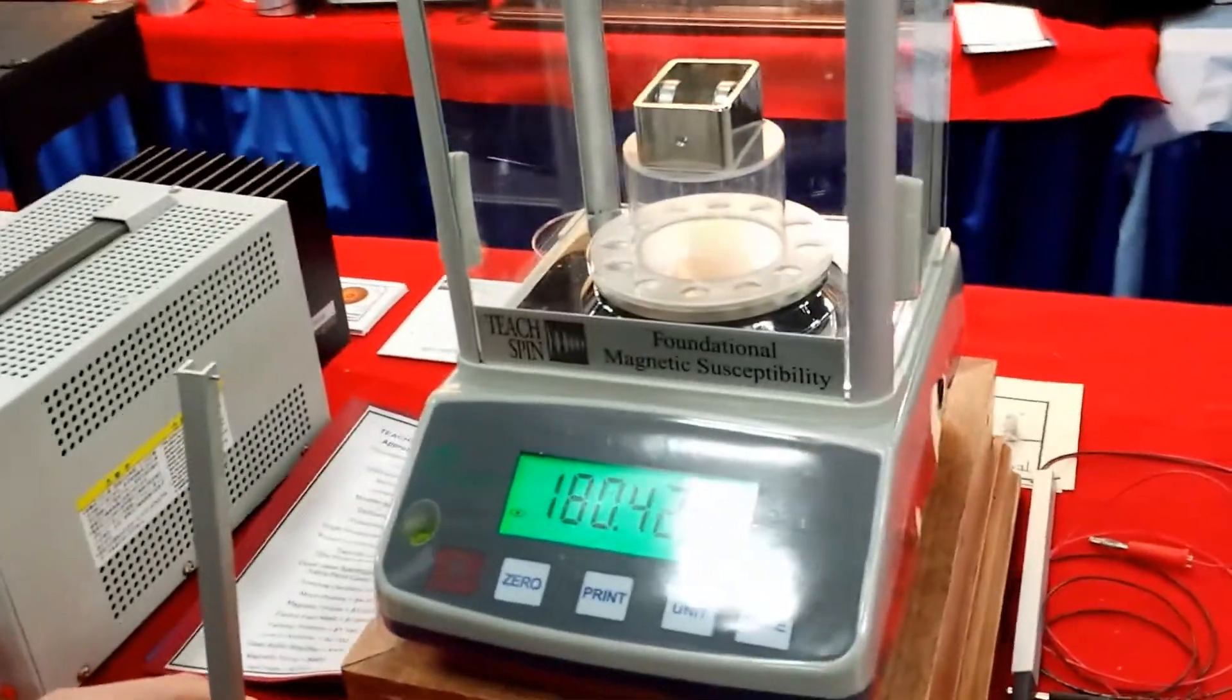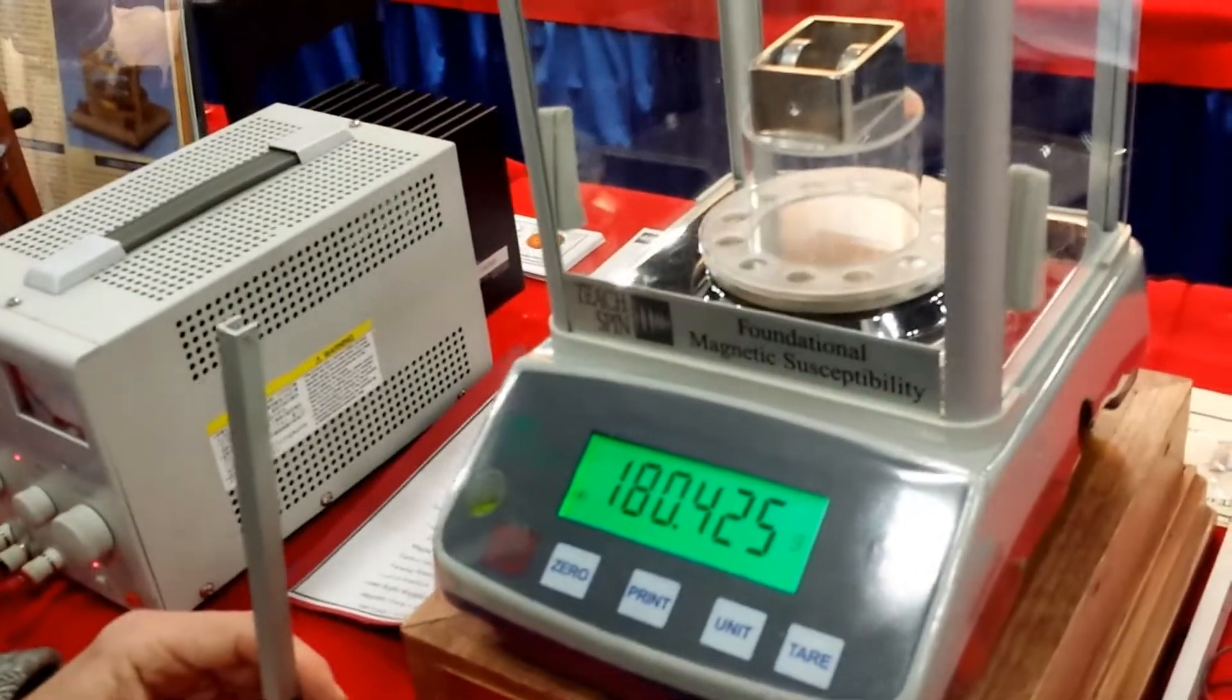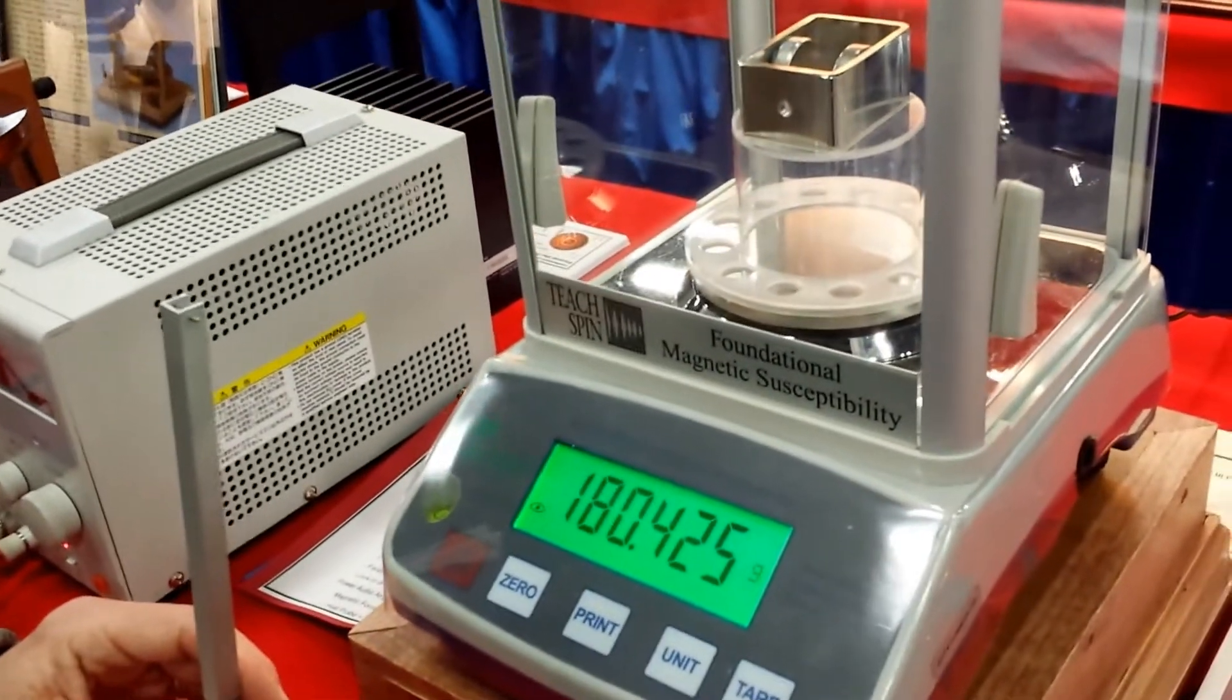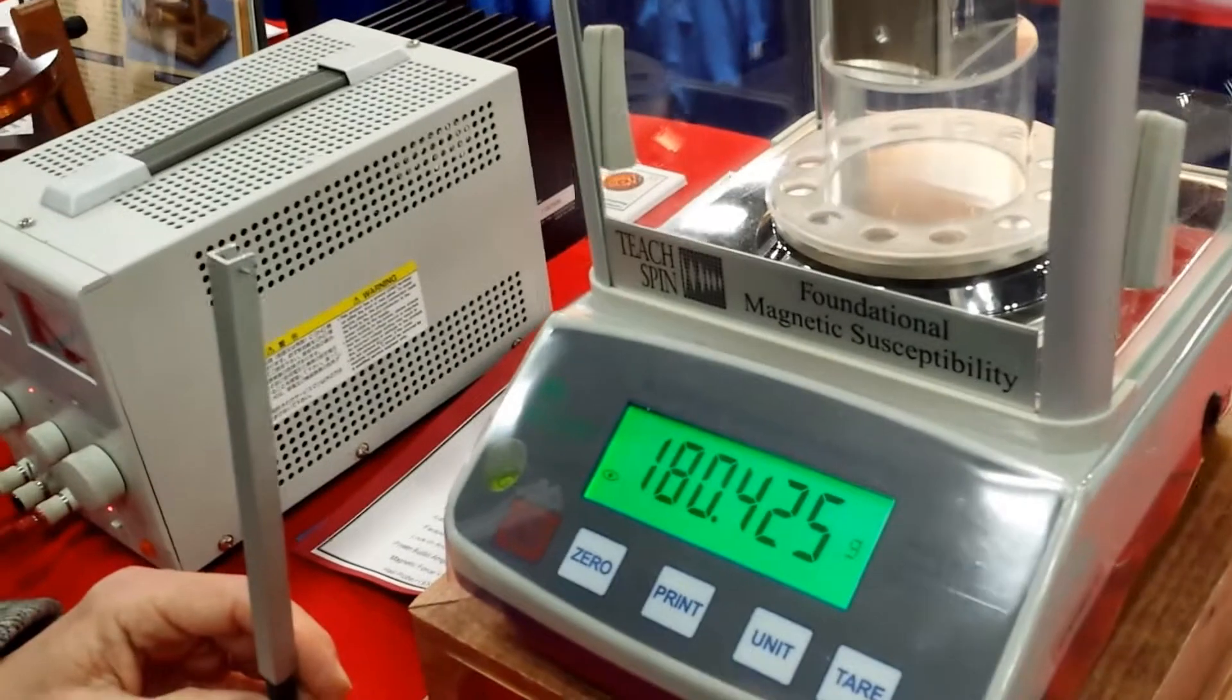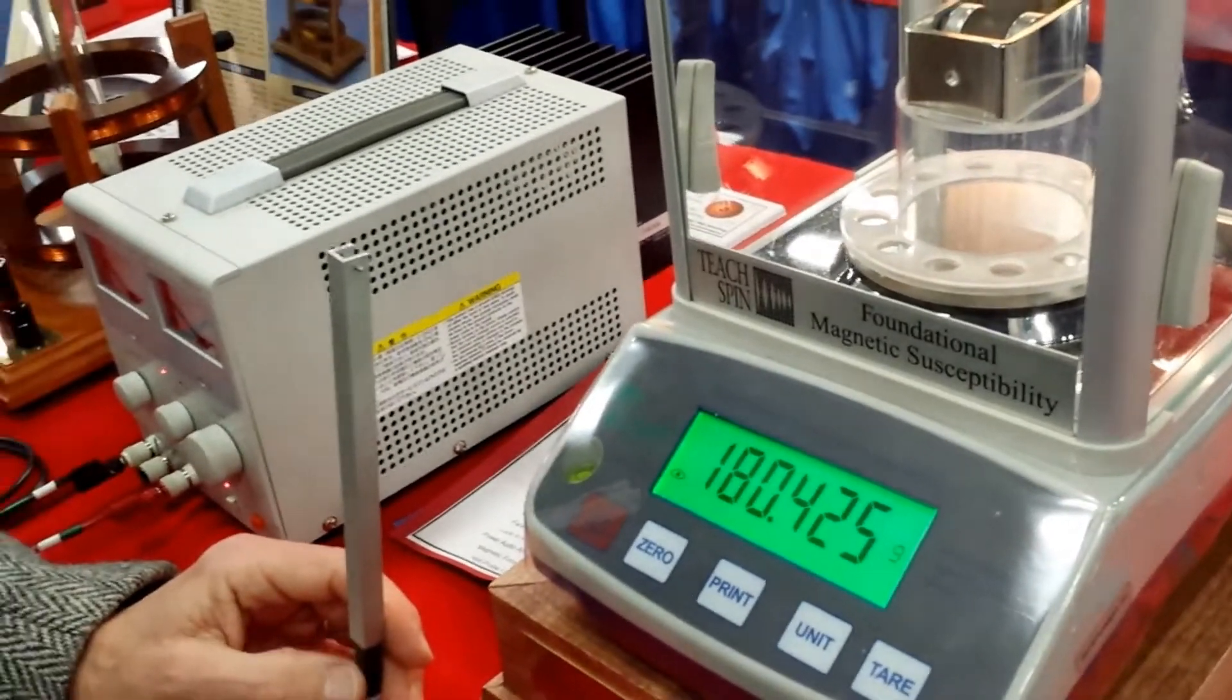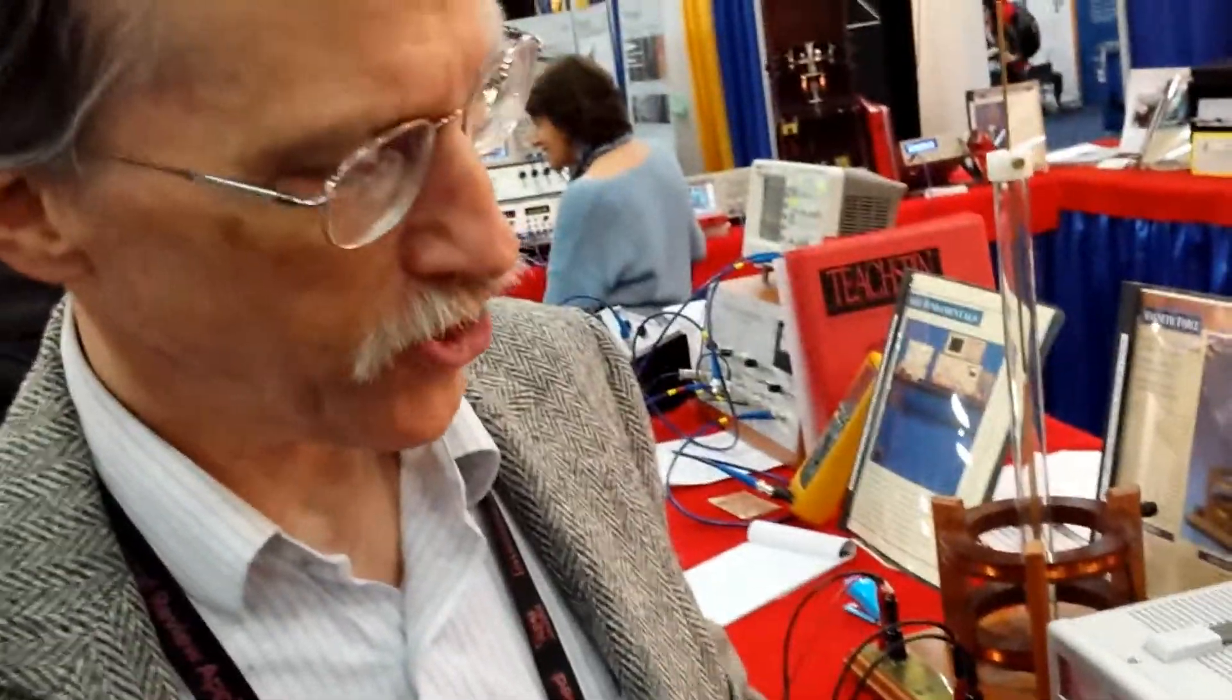Right. So the topic that we discuss primarily in the course is diamagnetism, this universally repulsive force. And I understand that your firm is making a very simple apparatus to demonstrate diamagnetism using the measurement of a force on an ordinary sample material. So perhaps you could run through that with us.